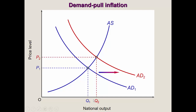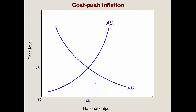Firms produce more in response to rising demand, though how much output increases depends on firms' planning and expectations of future inflation and demand. The rise from P1 to P2 in the economy creates inflation. To calculate the inflation rate: take P2 minus P1, divided by P1, times 100 — the difference divided by the original price gives us the inflation rate. That is an example of demand-pull inflation.